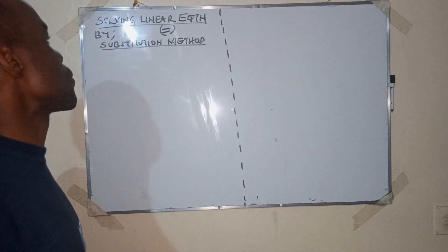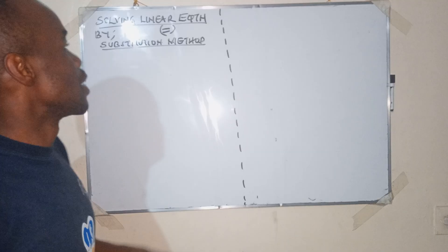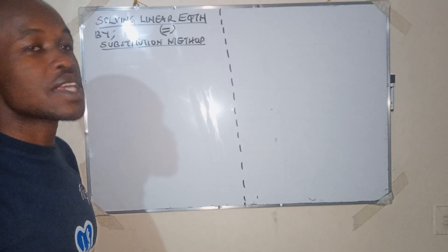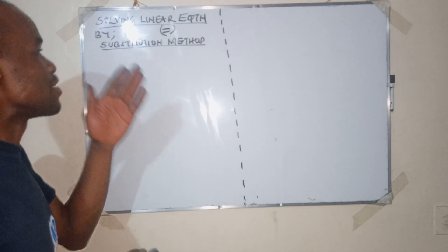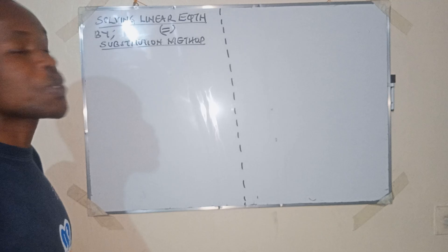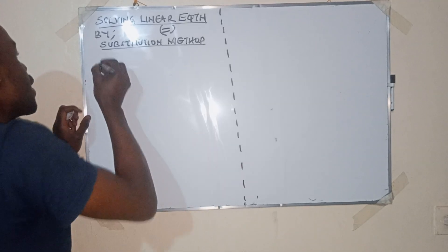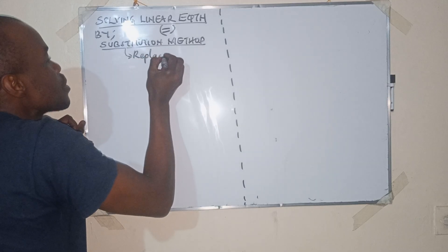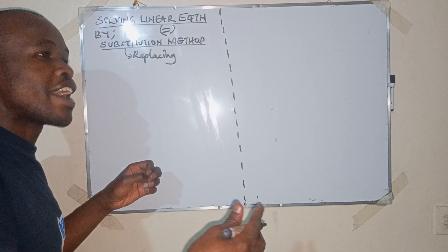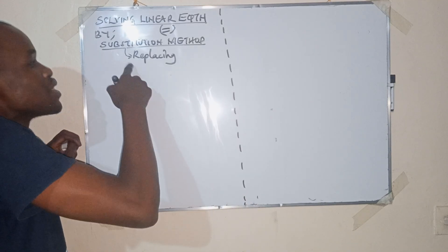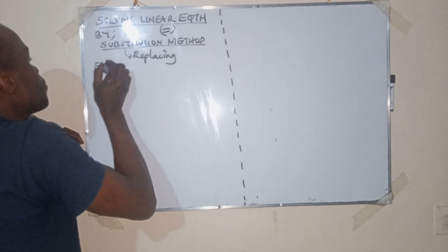Welcome, learner, to STEM Pathway. Today we are focusing on solving linear equations by the substitution method. Any equation with an equals sign is a linear equation — 'linear' comes from one straight line. Substitution means replacing, like in football when a tired player is substituted by one who was warming up outside.